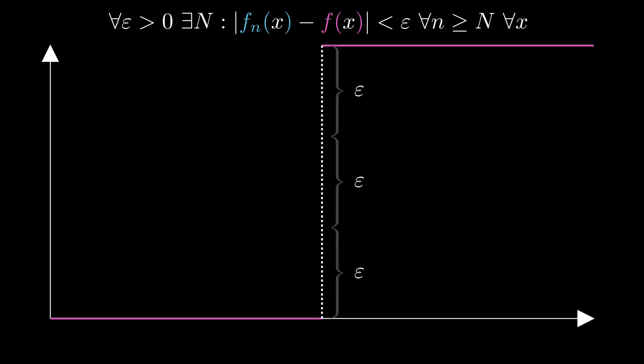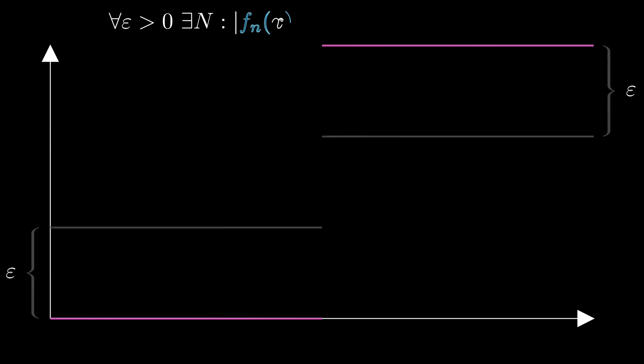But recall that the statement in the definition of uniform convergence is supposed to be true for every epsilon bigger than zero. So we could for example take epsilon to be a third of the distance at the point of discontinuity. Then at some point the approximating functions should all lie inside this epsilon tube here. But that means that they would need to magically skip this middle third here, and therefore they couldn't be continuous. But we wanted to approximate f uniformly with continuous functions, and clearly that's not possible.